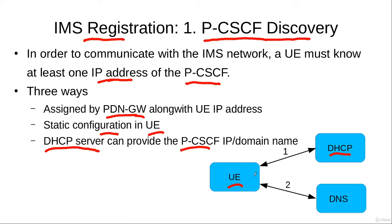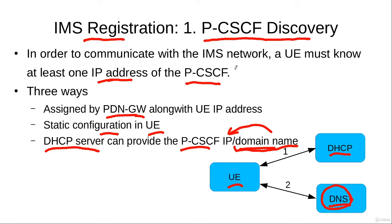Alternatively, the DHCP server may give the domain name of the proxy call session control function to the user equipment. In this case, the user equipment would need to generate a second query to the DNS server in order to translate this domain name to the IP address, because it is the responsibility of the DNS server to translate the domain name of the proxy call session control function to the IP address and then give this IP address to the user equipment.